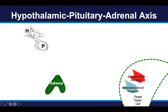Here's the entire hypothalamus, pituitary, and adrenal axis. The hypothalamus and pituitary are in the brain. The adrenal glands sit on top of the kidneys in the abdomen, and the receptors for cortisol and aldosterone — the glucocorticoid receptor and the mineralocorticoid receptor — are expressed in cells throughout the body.